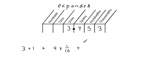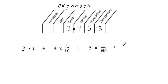And we're going to add that to the next thing, which is 5 of these, which are hundredths. We're going to represent that by 1 over 100. And then finally, we're going to add the 3 thousandths — and that's going to be 3 times 1 over 1,000.